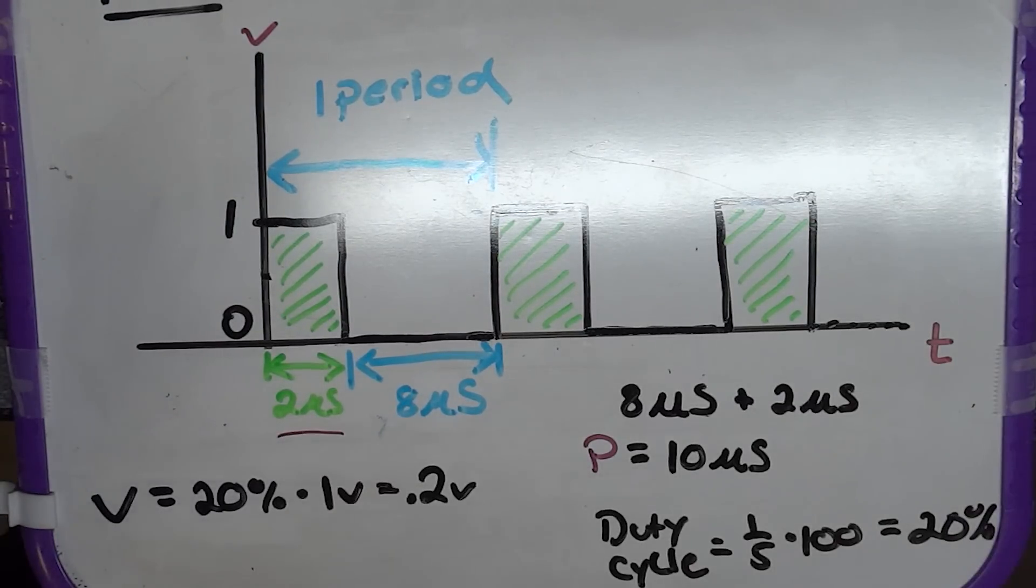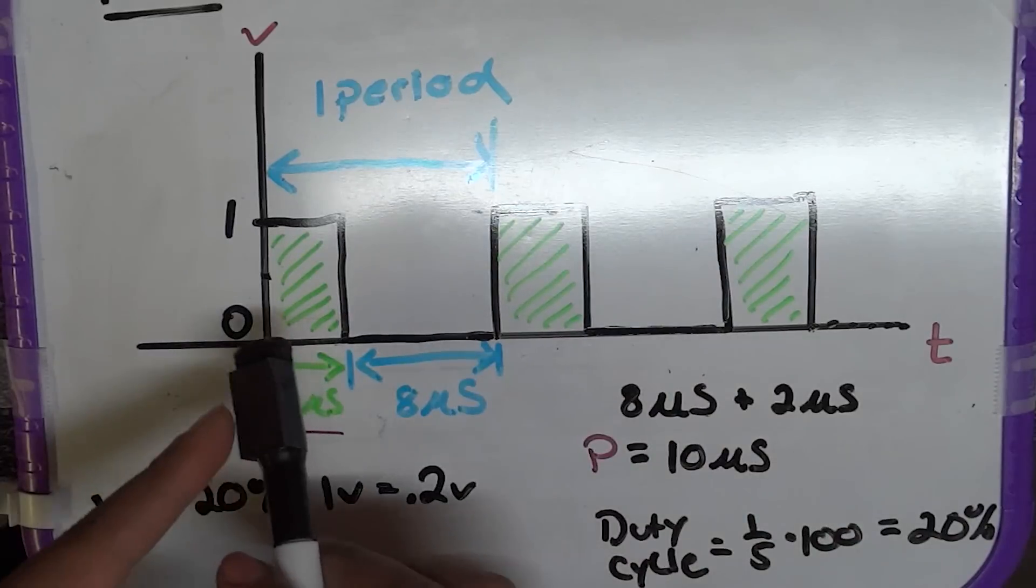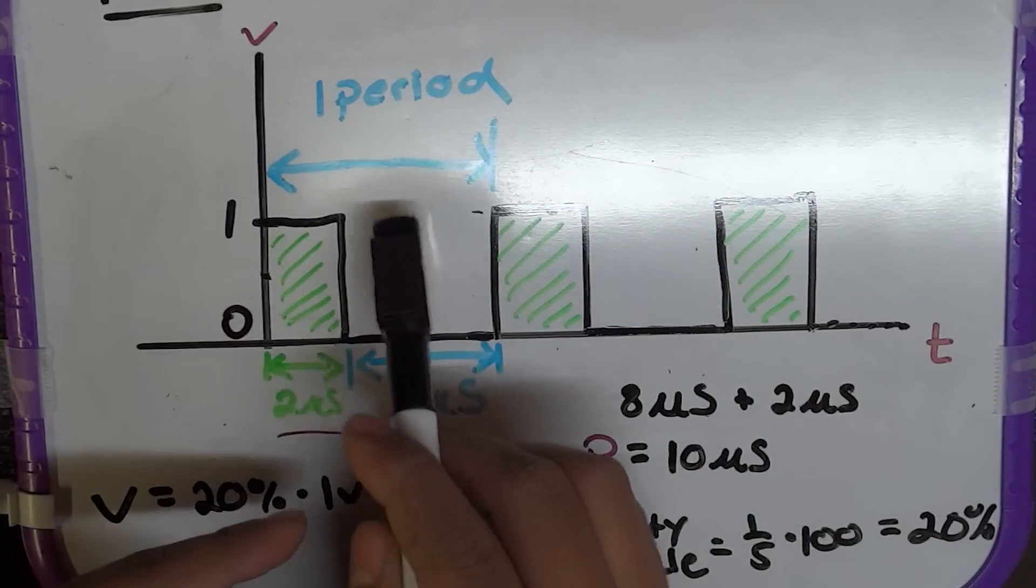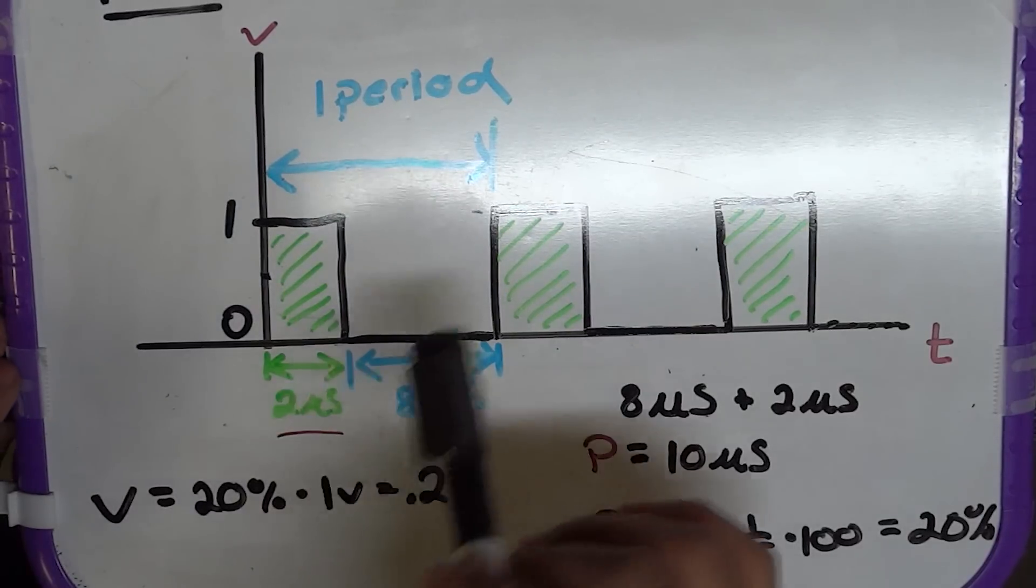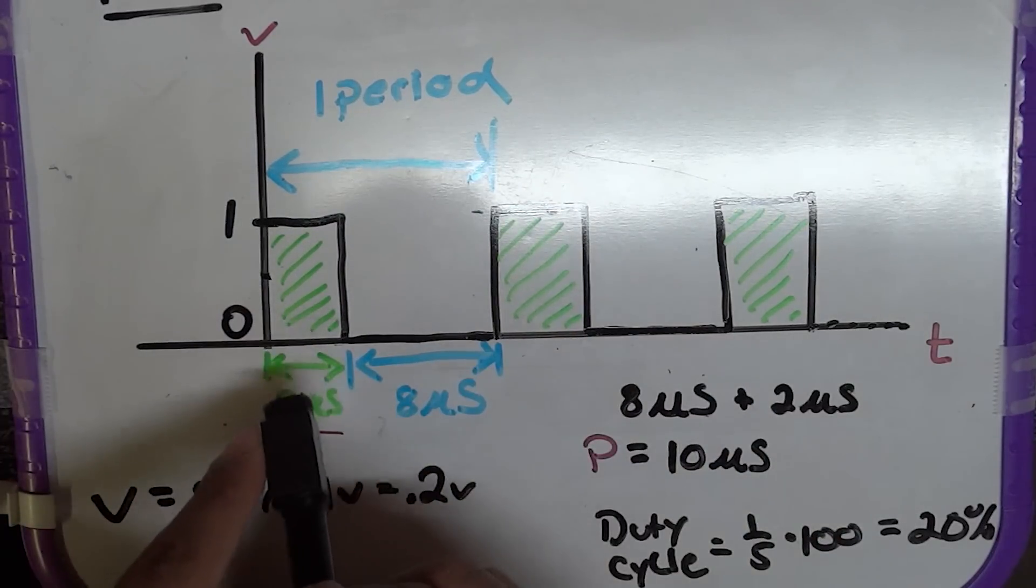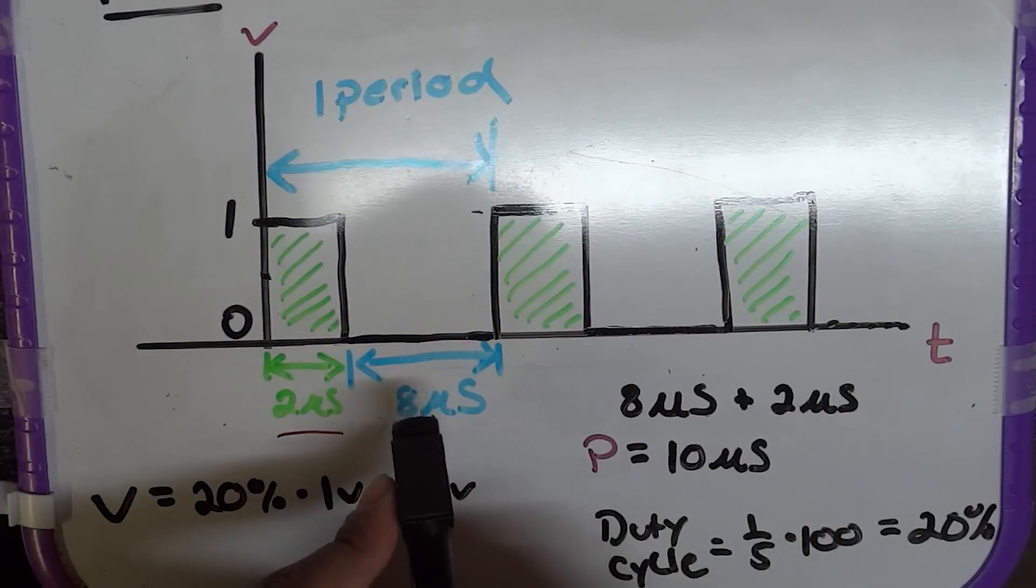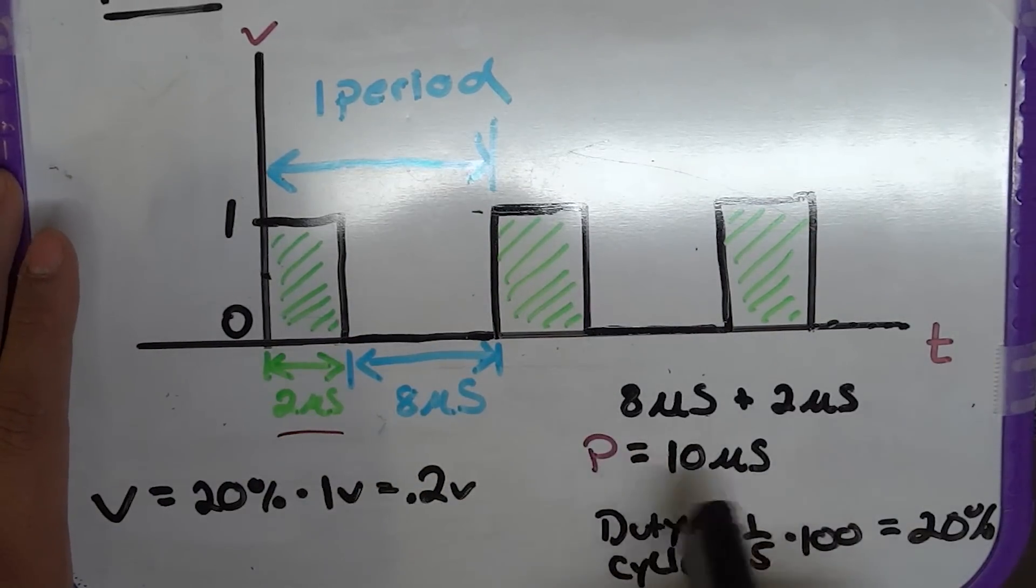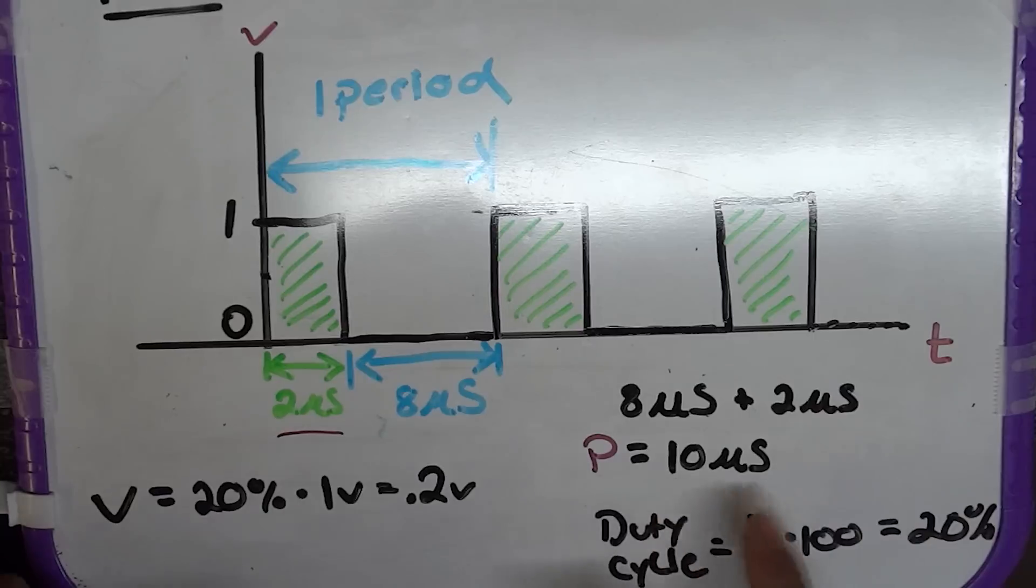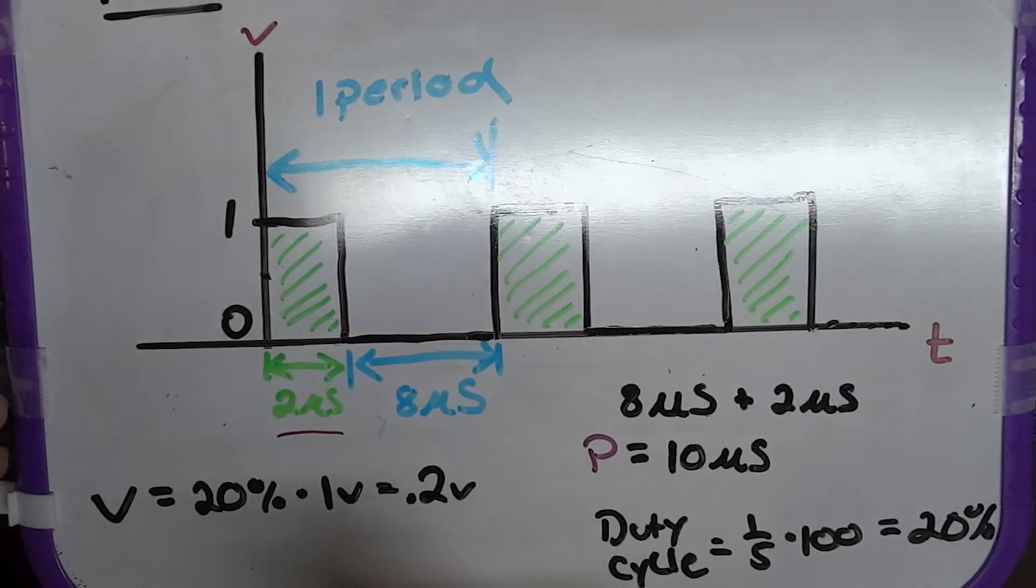So, the period is the length of the on and off time right here before it starts repeating. So, in this case, it was 2 microseconds of on time and 8 microseconds of off time. And that gives you a total time of 10 microseconds. And that's your period. As you can see right here, we mark this as period.